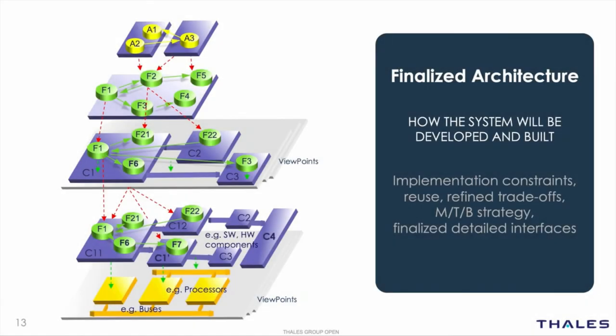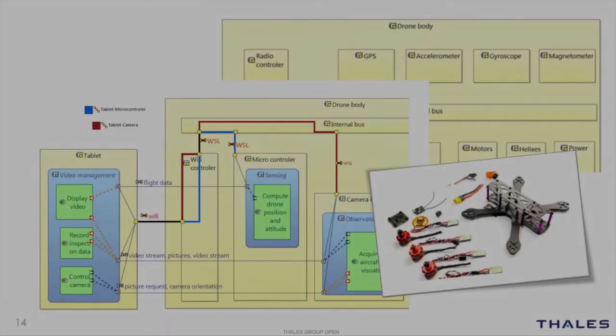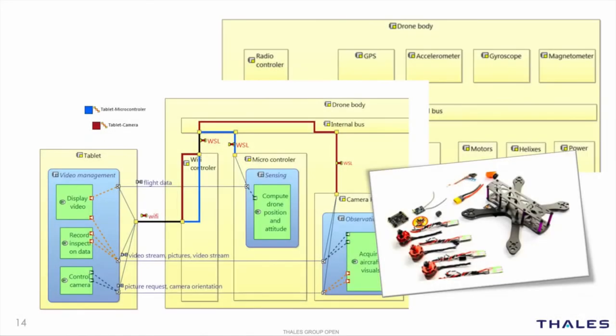We are now ready to move to the physical architecture or finalised solution. Here, we will make hardware choices, decide between the make, team or buying strategies, refine trade-offs, and detail interfaces. The physical architecture describes the finalised solution with enough details to produce unambiguous contracts towards downstream engineering teams.